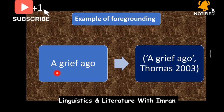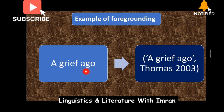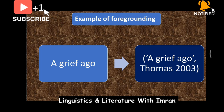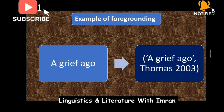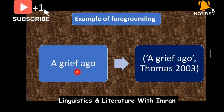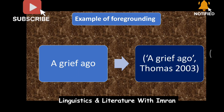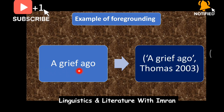Example of foregrounding: 'A Grief Ago' is written by Thomas in 2003. The word 'ago' is used here — usually it is followed by a countable noun related to time. We say 'a week ago', 'a month ago', 'two months ago', 'a year ago', 'five years ago'. In English, we use a countable noun. But here 'a grief ago' uses a noun that is uncountable, mass noun, and related to emotion — 'grief' meaning great sorrow, suffering, pain. The writer's pain is so intense and so much.